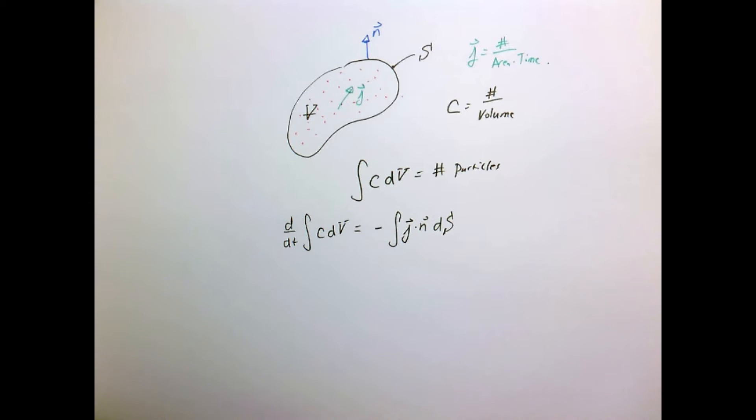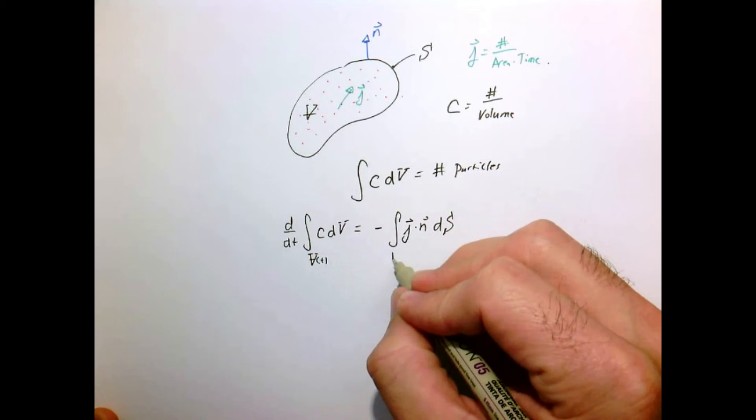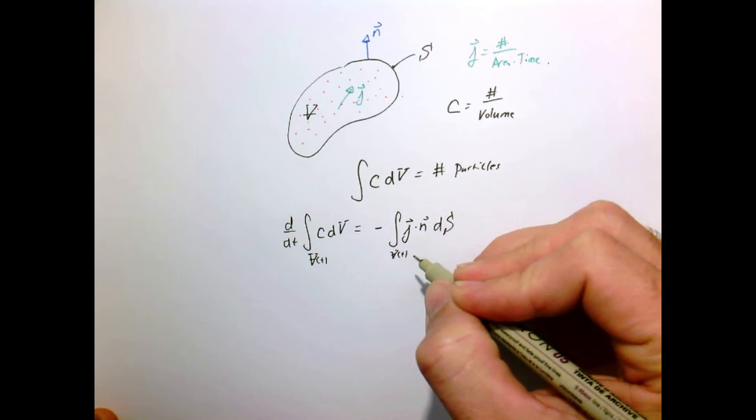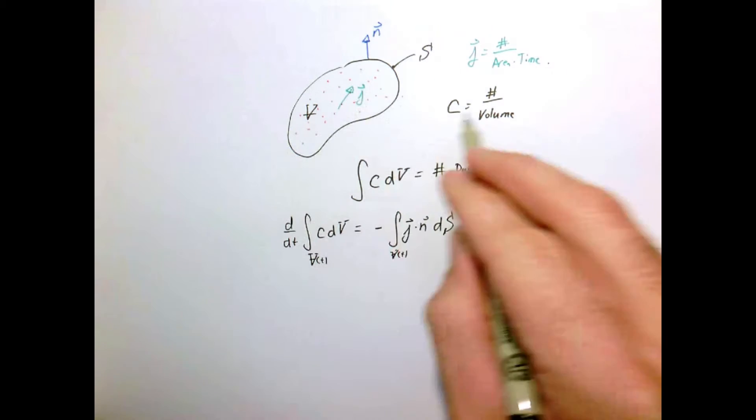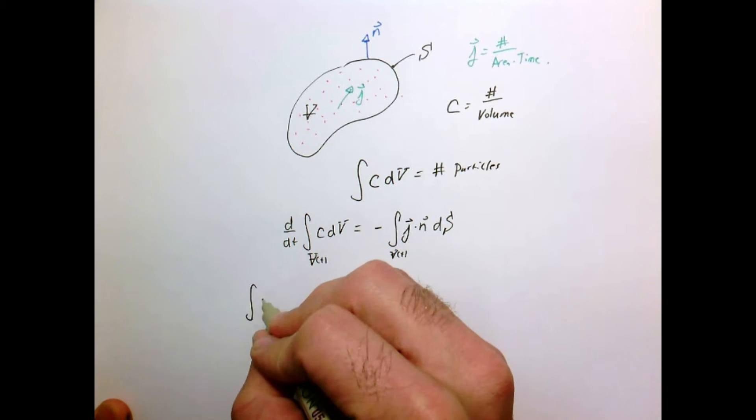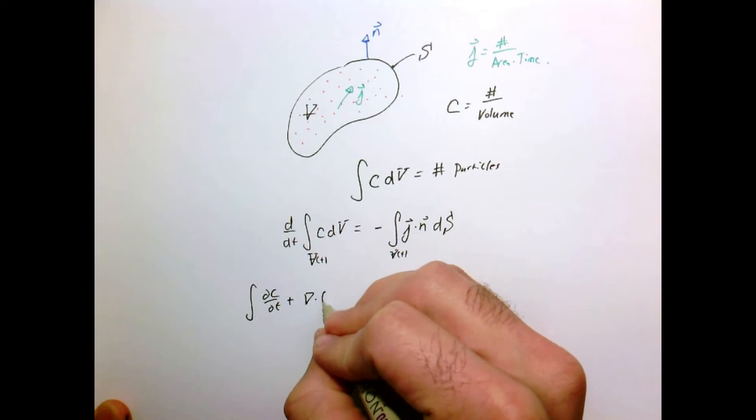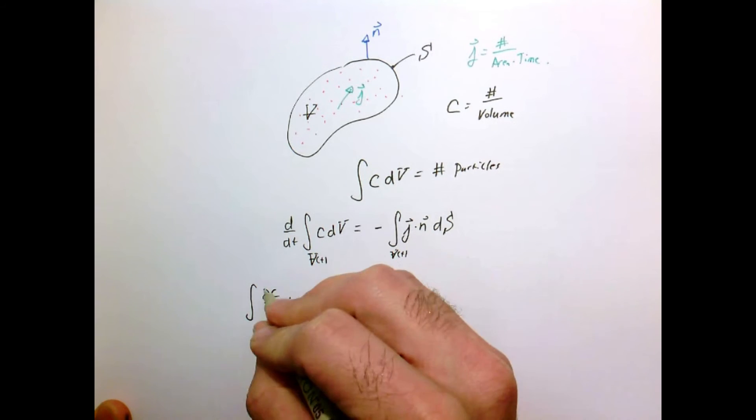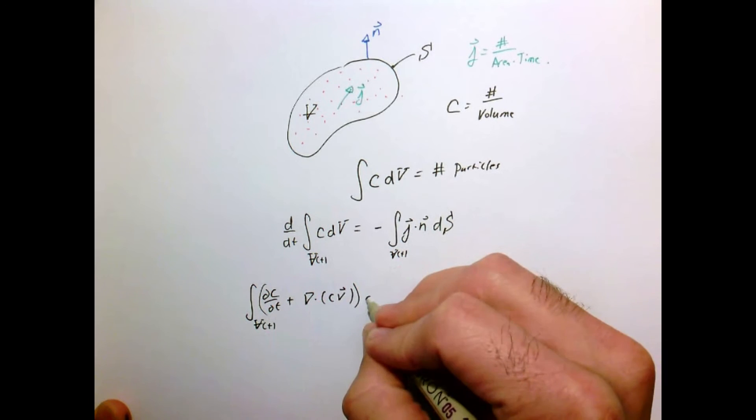If we're taking our volume of integration to be a material volume, one that's going with the flow and can possibly deform if this fluid is being convected or carried around, then we can't just simply move the derivative inside the integral. We have to use the theorem we derived, which tells us that we now have two terms when we move our derivative inside the integral sign when our volume is changing with time.